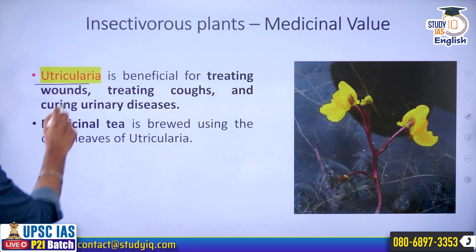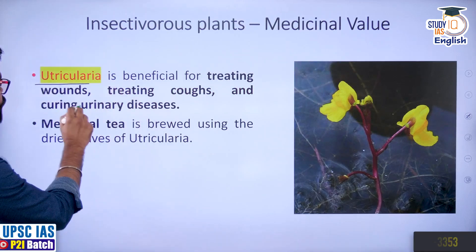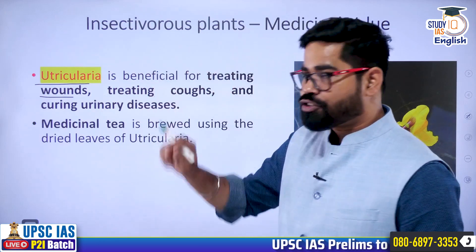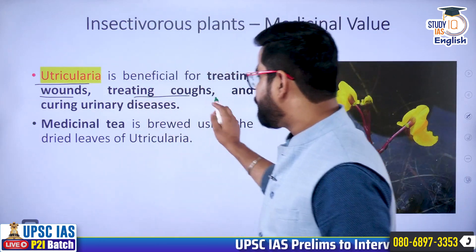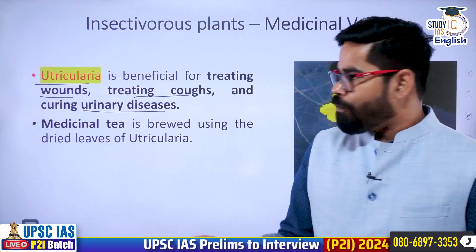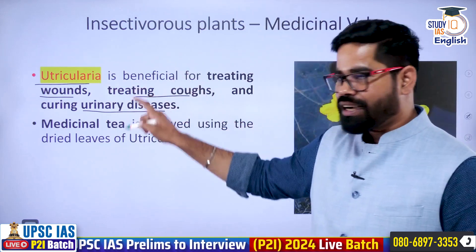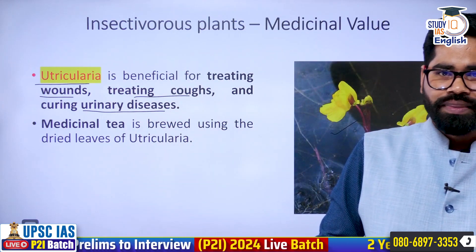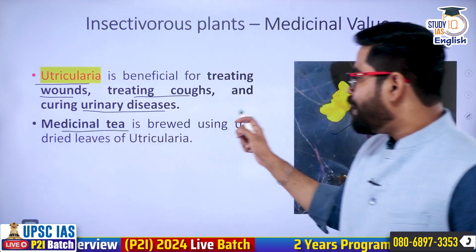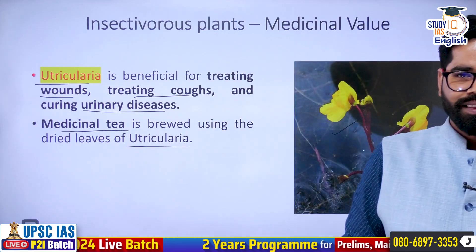We also have utricularia, which is used for treating wounds. If people have got some wounds, or even in treating coughs and urinary diseases, utricularia is also being used. Medicinal tea is also brewed from the leaves of utricularia. So this is another insectivorous plant that is helping human beings.